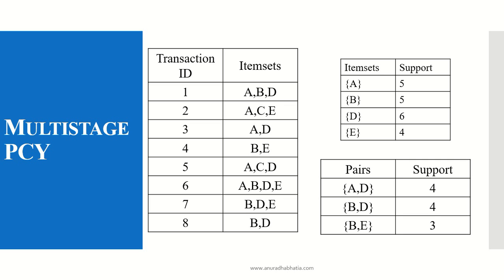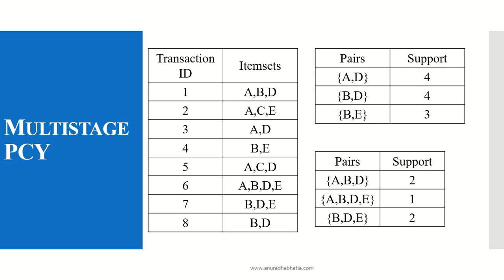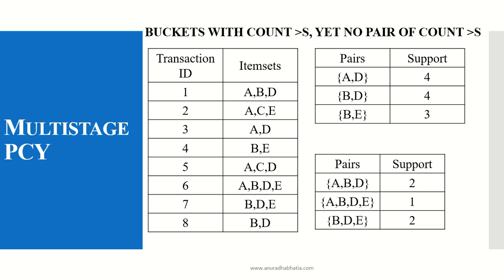We now find the third candidate, since this is a multi-stage algorithm leading us to the third pass. From the L2 pairs — AD, BD, and BE — we generate the candidate 3 item sets: ABD, ABDE, and BDE. From the initial transaction ID table, their supports are 2, 1, and 2 respectively — each less than the minimum support of 3. Buckets with count greater than s yet no pair with count greater than s means these tend to be false positives.